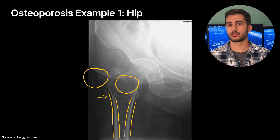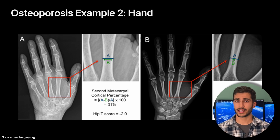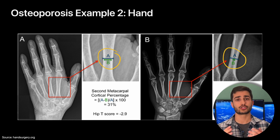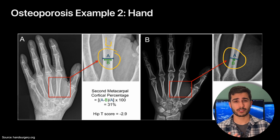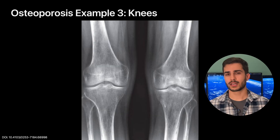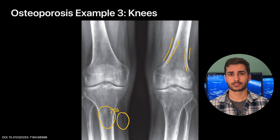You can also expect to see changes in the bony trabecular pattern, with less of that pattern showing up given the decreased bone density. Here's another example in the hand — you can see very clearly the differences in cortical thickness on the left, which is osteoporotic, compared to the right, which is a normal hand x-ray. And here's another example of osteoporosis in the knees — you can tell immediately the decreased density in the bone, how similar it is to the surrounding soft tissue, and the thinning of the cortex.